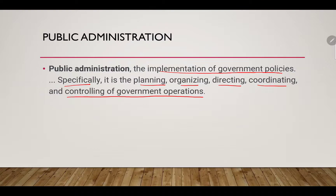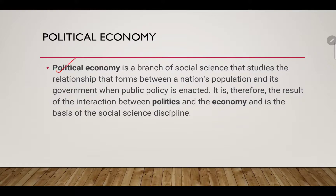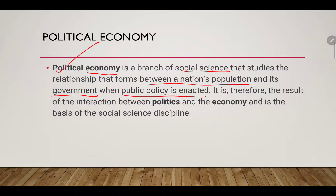Public administration is totally about the implementation of government policies — especially planning, organizing, directing, coordinating, and controlling government operations. Under public administration there are different levels and there is bureaucracy. Every country has its own public administration with branches and organizations that look after it. Political economy is a branch of social science that studies the relationship between nations, population, and government.